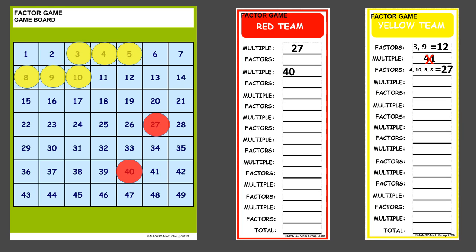The red team might also notice that the yellow team failed to cover up 2 factors: 2 and 20. So the red team adds 2 and 20 to their score for another 22 points, giving them 62 points from that round. If the yellow team had gotten that 2 and 20 and added it to their 27, they would have earned 49 points, which would have been more than the multiple of 40 — a good factor score for the yellow team. But because they missed those, the points go to the red team.